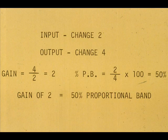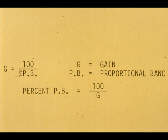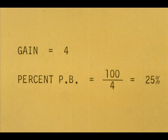We have shown that a gain of two and 50% proportional band are the same. These formulas will convert proportional band. A controller has a gain of four. What is the percent proportional band? From the formula, percent proportional band equals 100 divided by the gain. The answer is 25%.